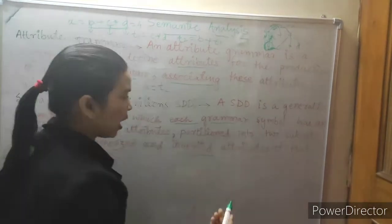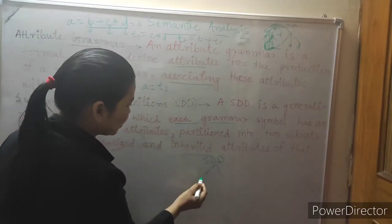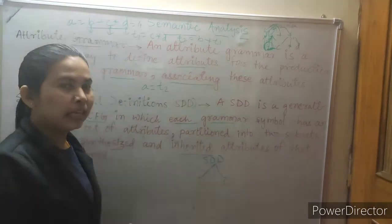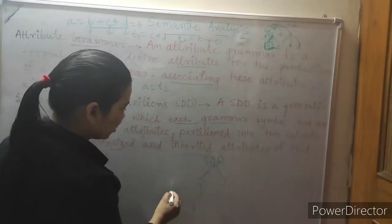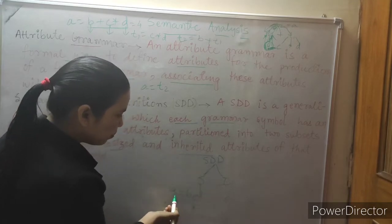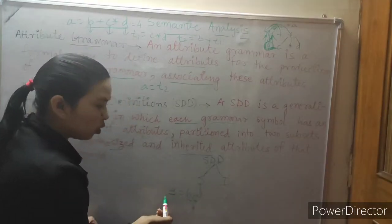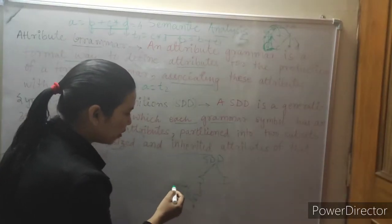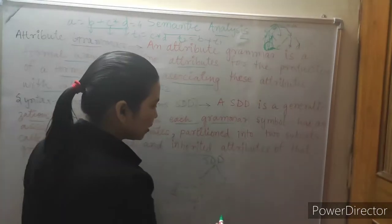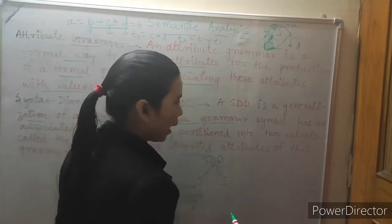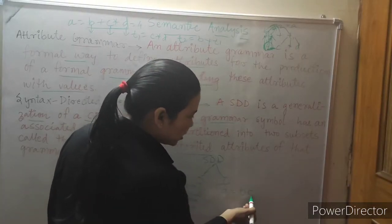Syntax-directed definition has two types: synthesized and inherited. A synthesized attribute takes its value from its children. For example, in A → BC, A is the parent (left side) and B and C are children of A, so A can take the value of B as well as C.